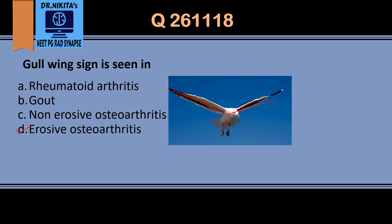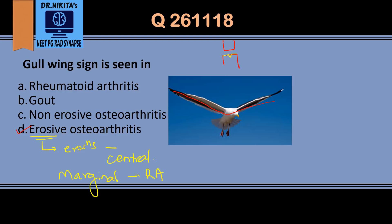In a normal joint space, erosive osteoarthritis causes central erosions rather than the marginal erosions seen in rheumatoid arthritis. Central erosions mean the bone surface gets depressed in the center, rather than having a smooth surface.